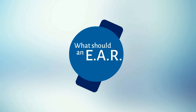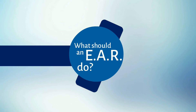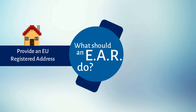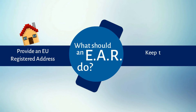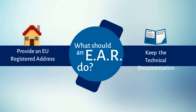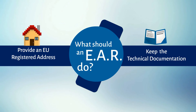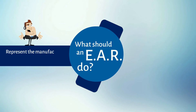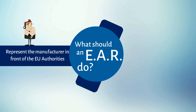What should an EAR do for the manufacturer? The EAR should: 1. Provide the manufacturer with a registered address in the EU to be mentioned on the product packaging. 2. Keep, at his registered address in Europe, the technical documentation available for inspection by the EU authorities. 3. Maintain constant availability to represent the manufacturer in front of the EU Commission, EU authorities, EU certification bodies, and the European users.